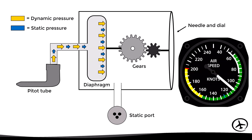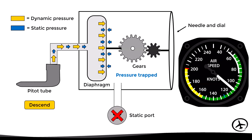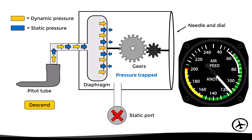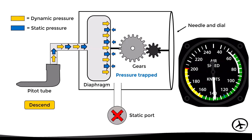Here is why: with the static port blocked, the static pressure at the time of blockage is trapped inside the instrument case, so the pressure outside the diaphragm remains constant. At constant altitude the diaphragm expands and contracts normally with dynamic pressure changes. However, if the aircraft descends, the static pressure entering through the pitot tube increases while the trapped static pressure in the case remains constant, causing the diaphragm to expand and the instrument to indicate a higher speed.